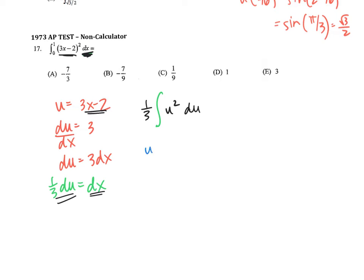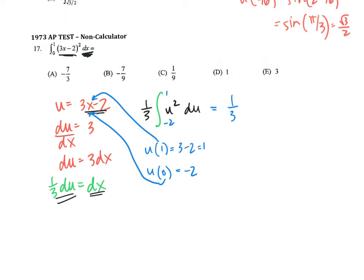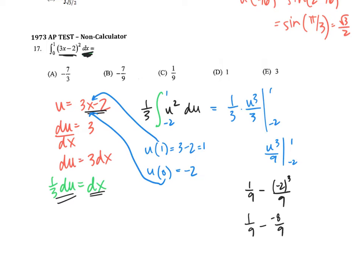I'm going to change my bounds. My upper bound was 1; plugging 1 into u gives 3 minus 2, which is 1, so the upper bound stays 1. My lower bound was 0; plugging that in gives negative 2, so my lower bound changes to negative 2. The antiderivative of u squared is u cubed over 3, evaluated from negative 2 to 1, which simplifies to u cubed over 9 from negative 2 to 1. Plugging in: 1/9 minus negative 8/9 equals 1/9 plus 8/9, which is 9/9, which is 1.